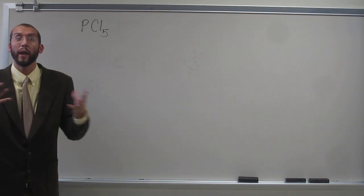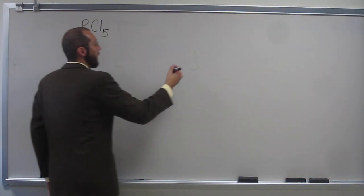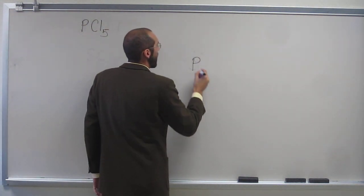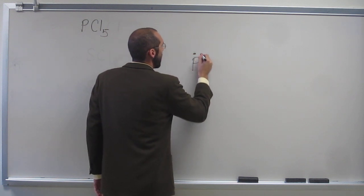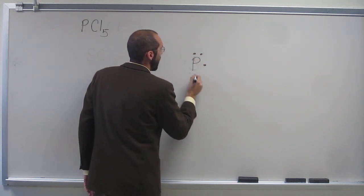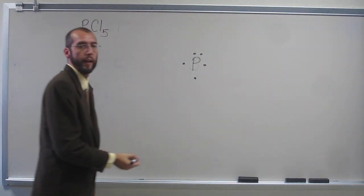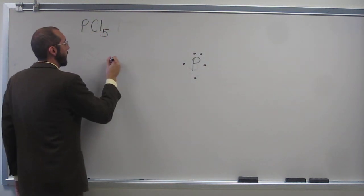So phosphorus must be expanding its valence. Let's draw phosphorus as the central atom, like that, and we'll put our chlorine around it.